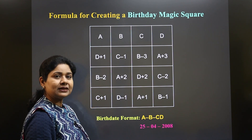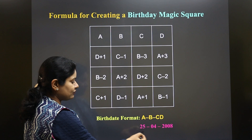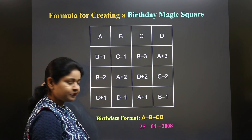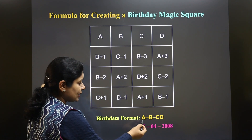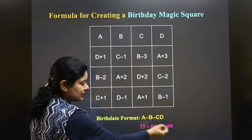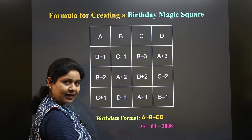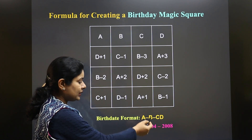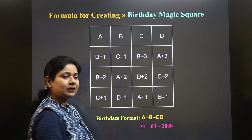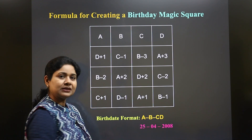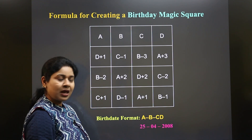For example, if you are taking the date as 25th April 2008: A represents the date, B represents the month, C represents the century, and D represents the year.